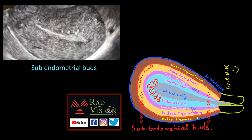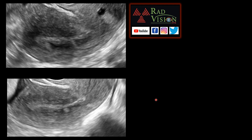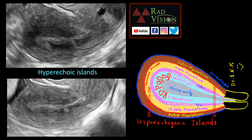In this case we will see multiple subendometrial buds — these are the subendometrial buds. Next, we will see hyperechoic islands. You can see this is a hyperechoic island, and this is also a hyperechoic island. These are hyperechoic islands of varying sizes and shapes.